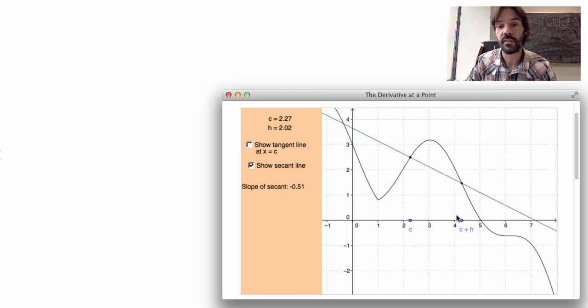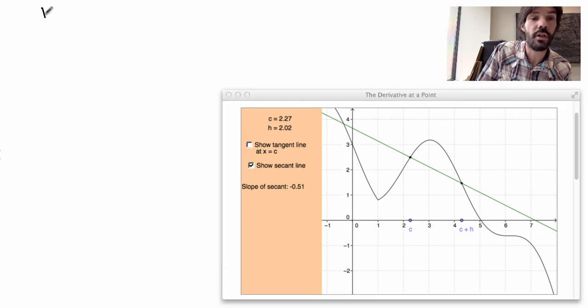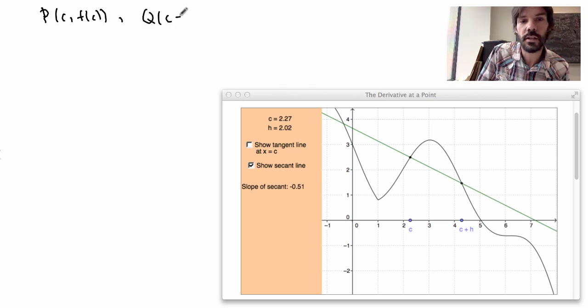So if I take two points on my curve, let me call the first point P—so the first point here is the point (c, f(c))—and the second point I'll call Q, which will be the point (c+h, f(c+h)). Now I have two points.